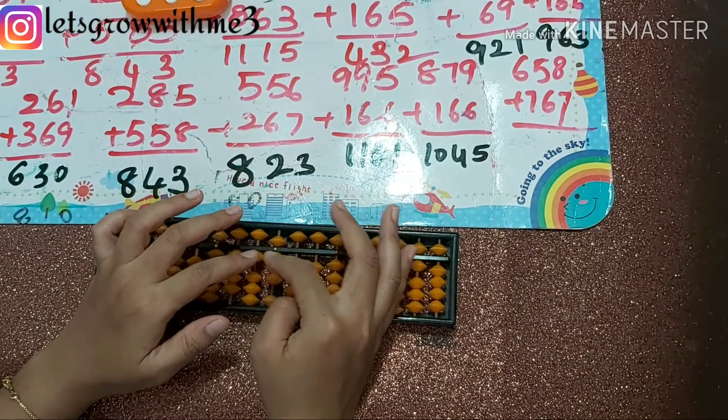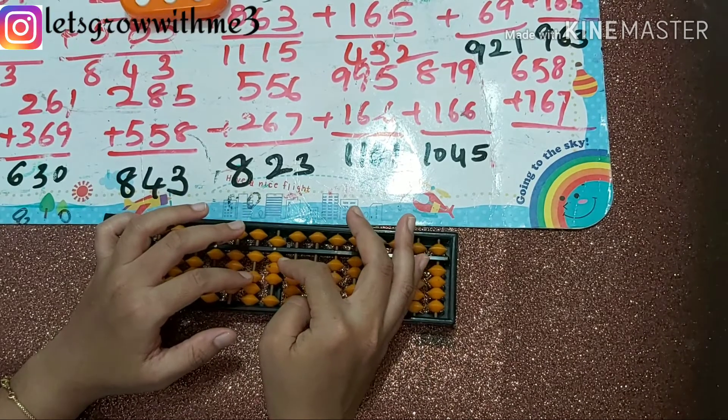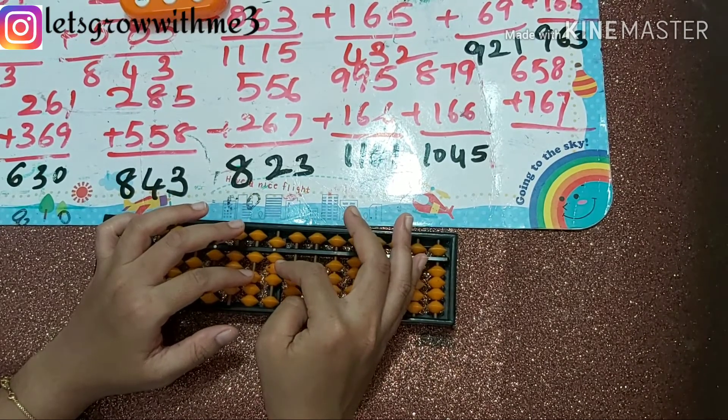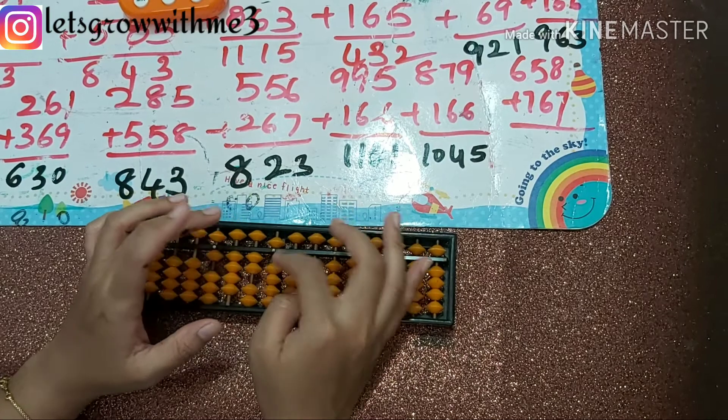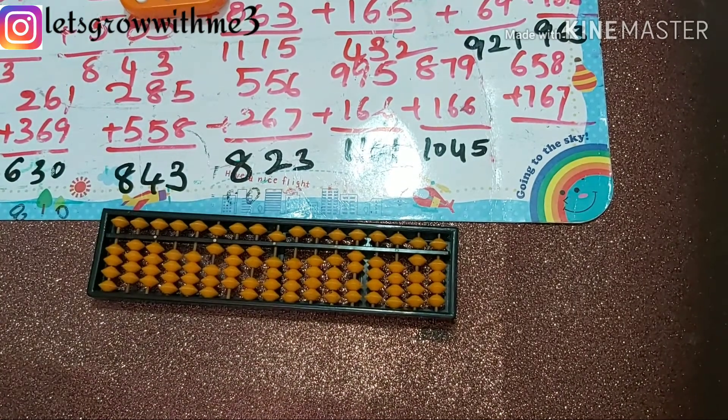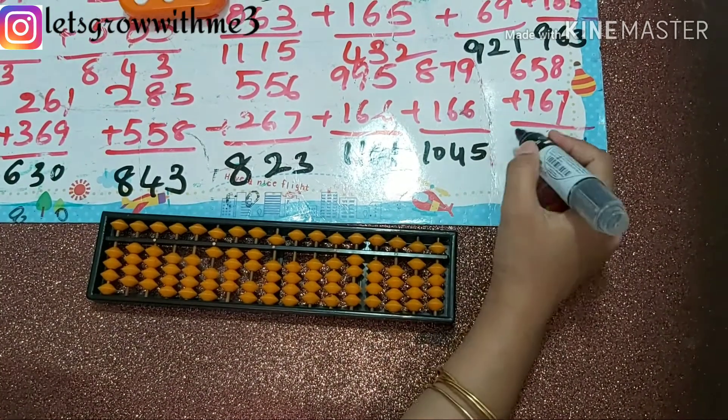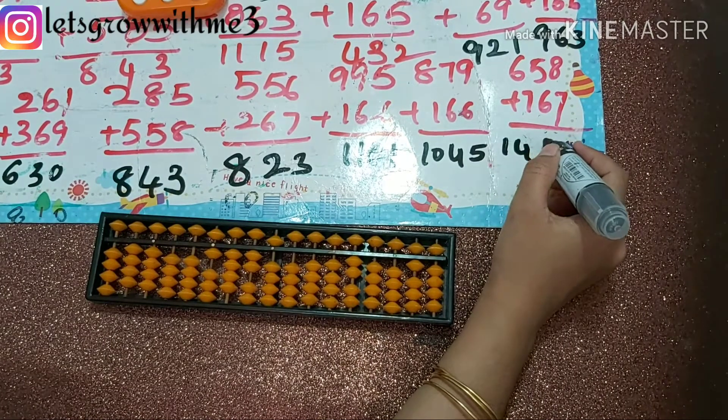Plus 7, plus 10 minus 3. So answer is 1425.